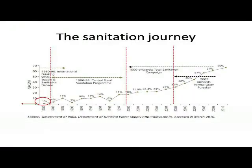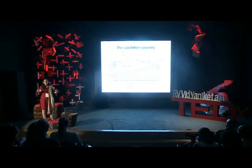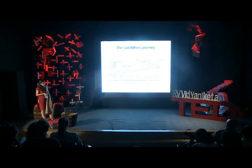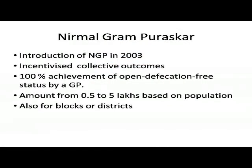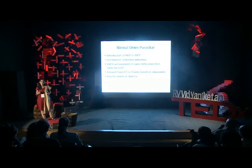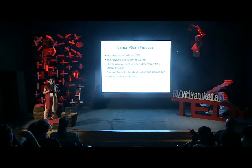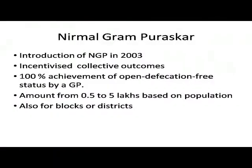You can see the numbers slowly creeping up and things were looking good, but it was still not fast enough. So in 2003, the government introduced the new idea of collective incentivization, because sanitation is only effective when practiced 100%. A new scheme called the Nirmal Gram Puruskar was started — the idea being financial incentivization. If a Gram Panchayat achieves 100% open defecation free status — not just 100% toilet coverage, because that's not the same — they get a cash prize ranging from 0.5 to 5 lakhs based on population. This was then expanded to entire blocks or districts, and the numbers started going up really well.